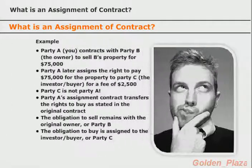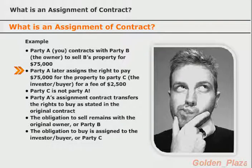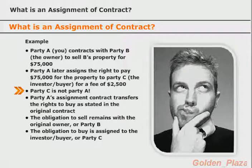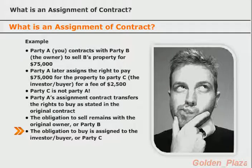For example, if Party A (you) contracts with Party B (the owner) to sell his property for $75,000, Party A later assigns the benefits of the contract — the right to buy that property for $75,000 — to Party C (the investor) for a fee of $2,500. In this scenario, Party A is the assignor, Party B is the obligor, and Party C is the assignee. Party A's assignment contract only transfers the rights or benefits to buy as stated in the original contract. The obligation to sell remains with the original owner (Party B), and the obligation to buy is assigned to the investor (Party C).